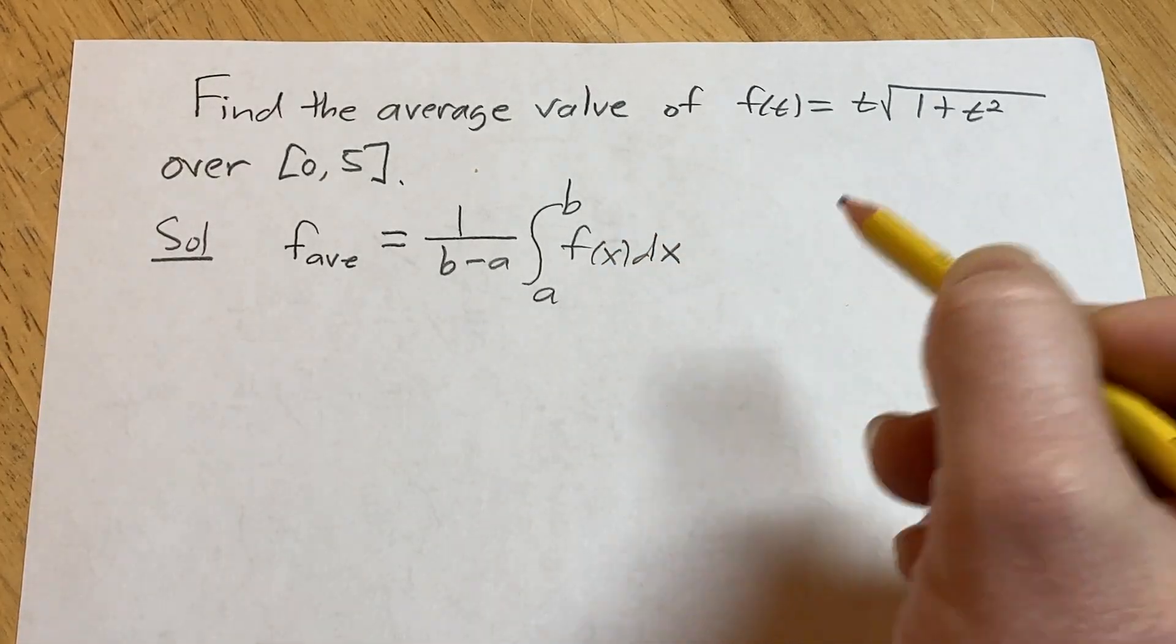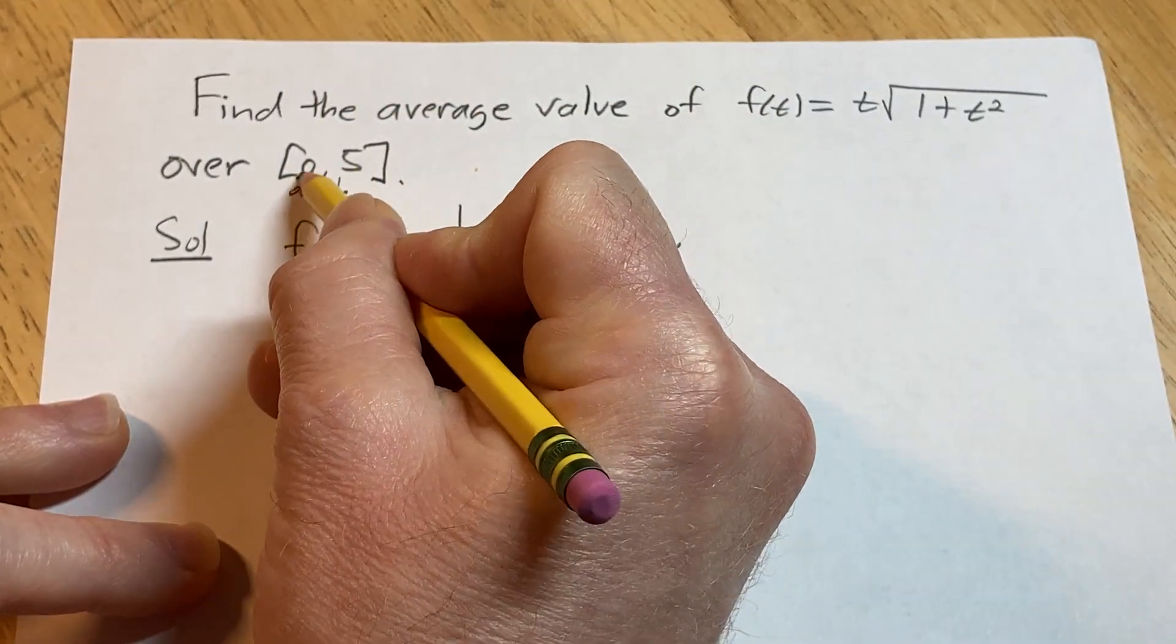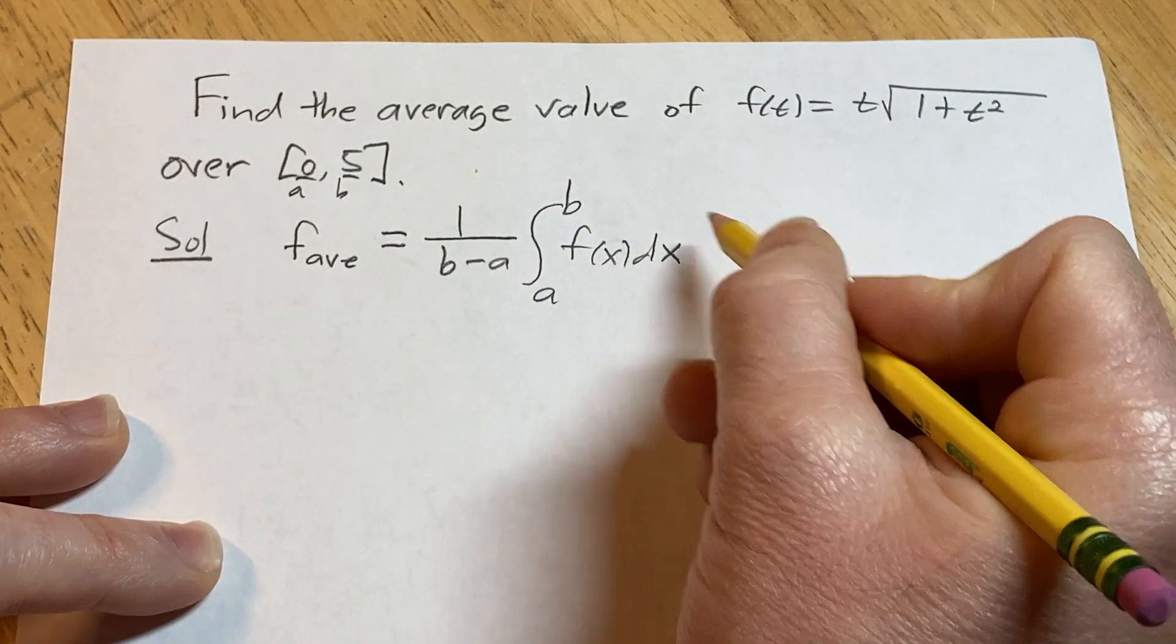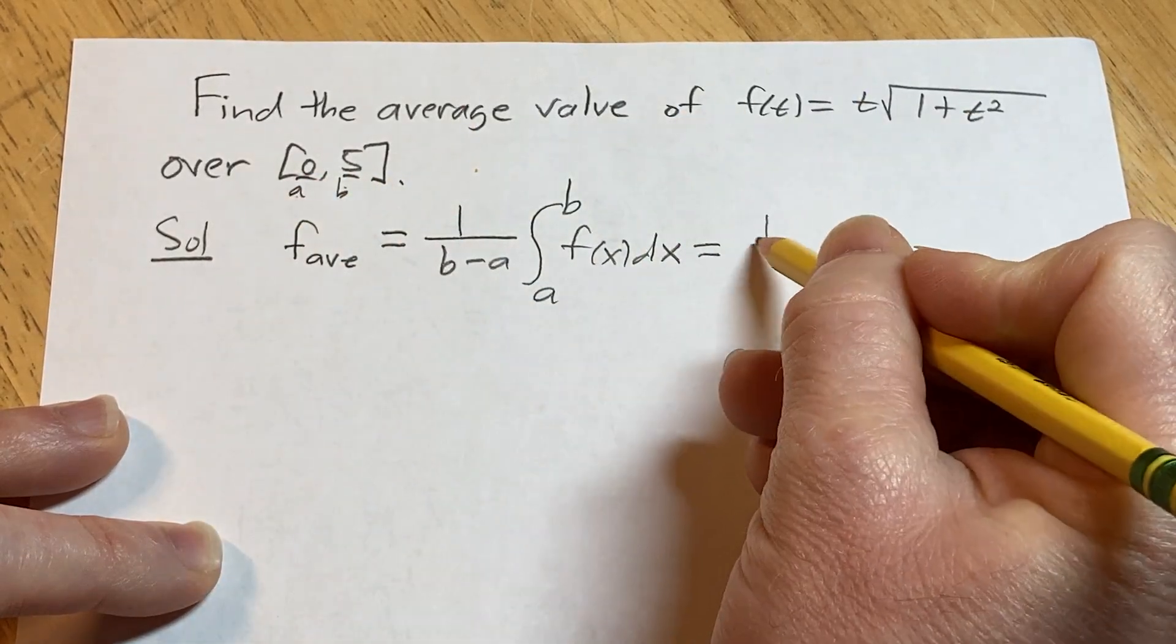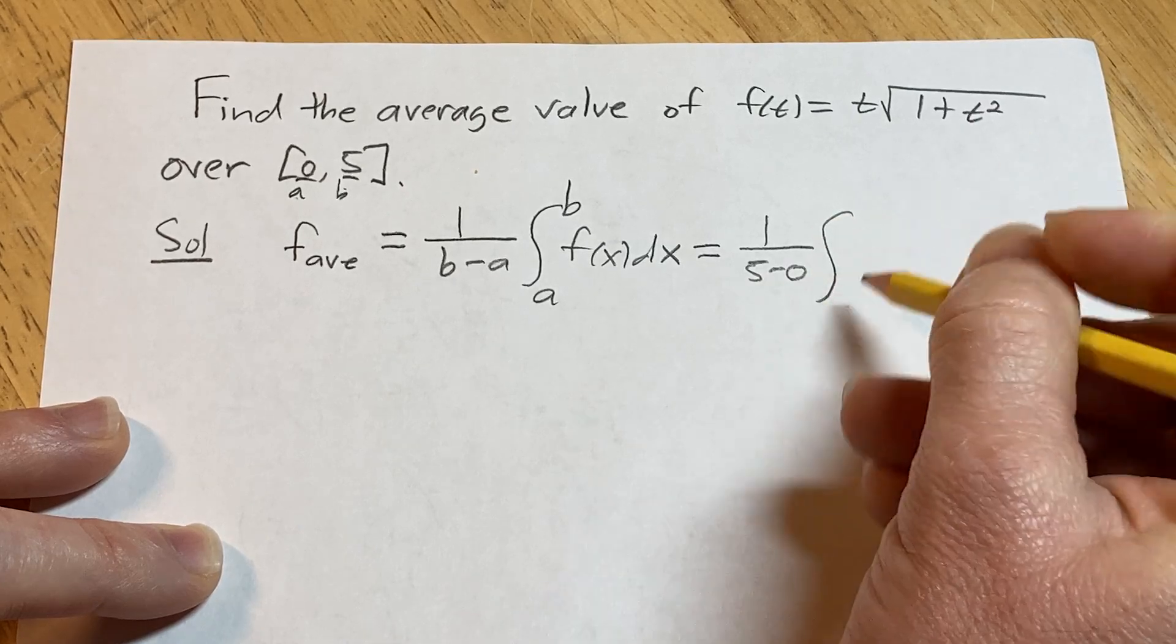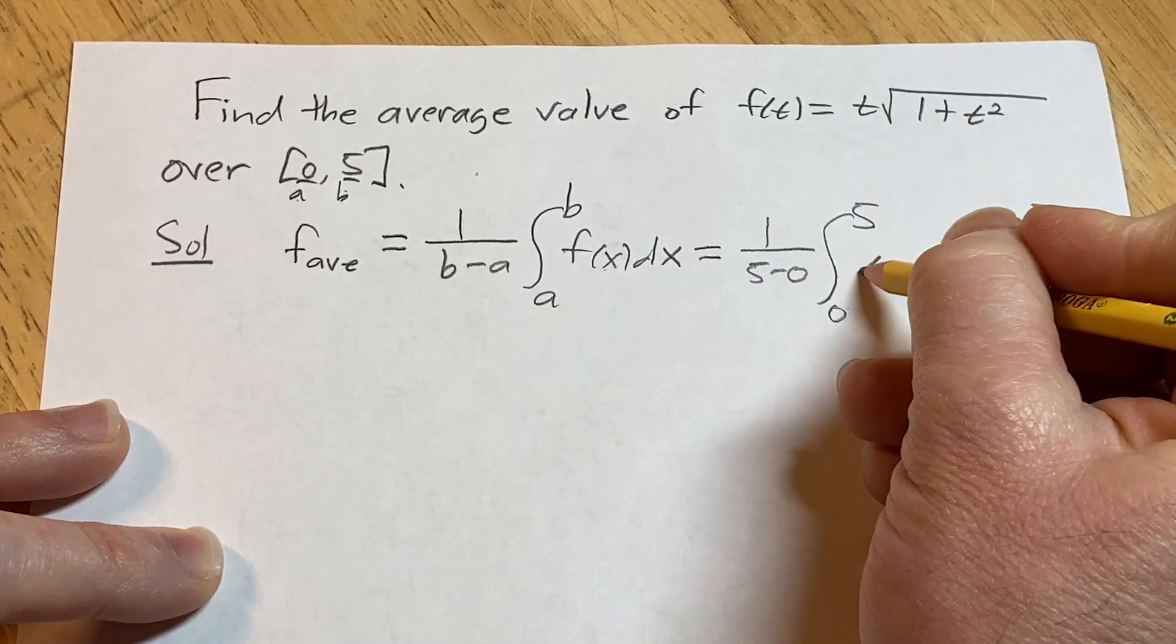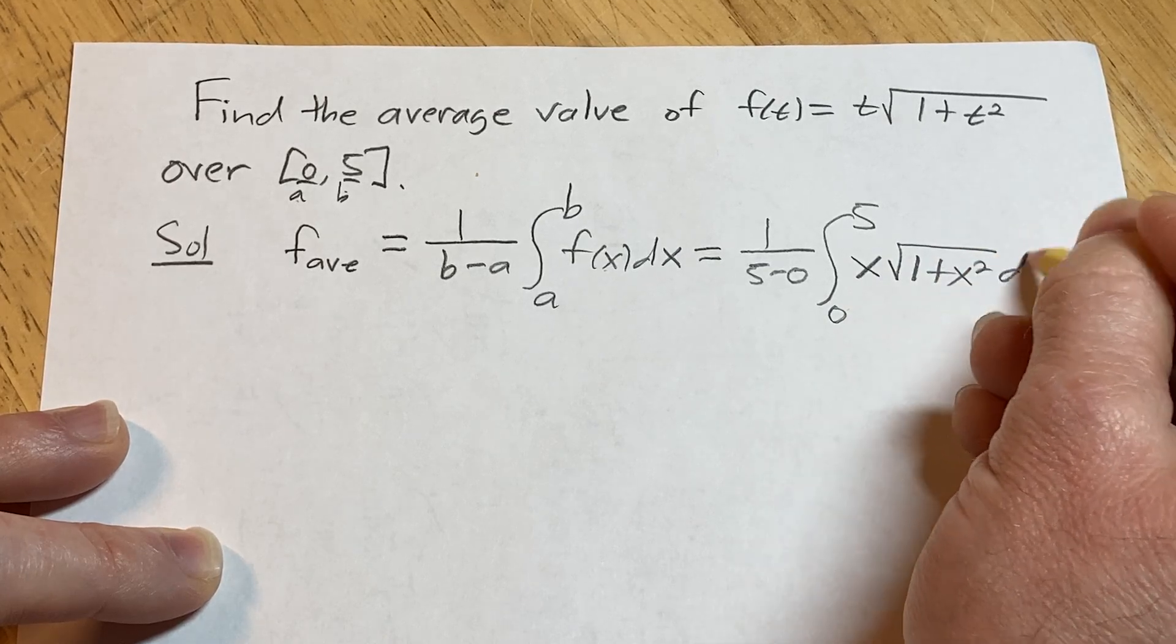So in this problem we don't have x, we have t, but that's okay. This is our a and this is our b and this is going to be our f of x. We're just going to change the t's to x's. So this is equal to, so b is 5 and a is 0, so it's 1 over 5 minus 0, and we're going from a to b, so 0 to 5. And again, instead of t we're going to use x, so it'll be x square root 1 plus x squared dx.